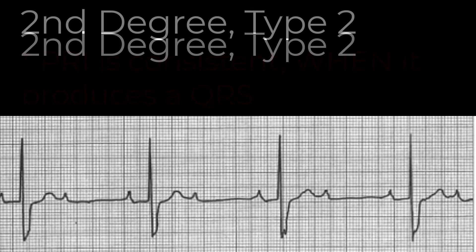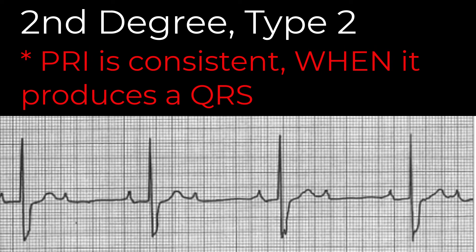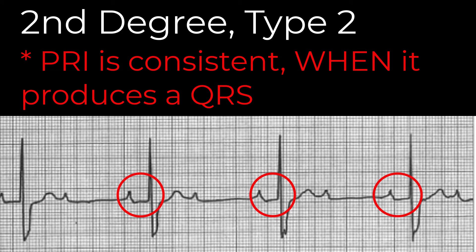A second-degree type 2 is usually located near the bundle of His. We recognize it by identifying that the P waves occur in a regular pattern across the ECG strip, because the sinus node is doing its job. However, not every P wave produces a QRS. When we look closer, we note that every time the P wave does produce a QRS, that PR interval is the same distance — it may be of regular length or a little longer, but it is the same each time. At other times, the P wave fails to conduct through the AV node at all and is followed by a pause with no QRS until the next sinus beat comes along. There may or may not be a pattern to those dropped beats — you may see every third beat dropped, or P waves that fail to conduct randomly and in no particular order.